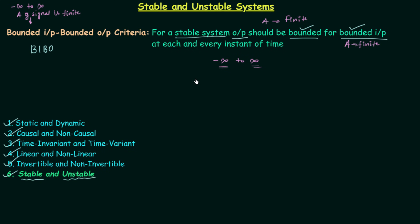An unstable system is a system in which when you provide the bounded input, the output of the system is unbounded — it does not have finite amplitude at each and every instant of time from minus infinity to infinity. So this is what we mean by unstable systems.